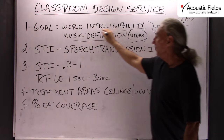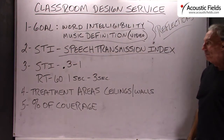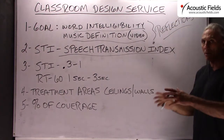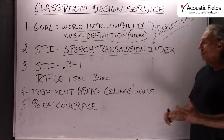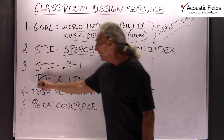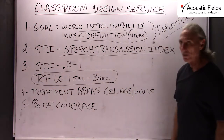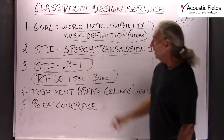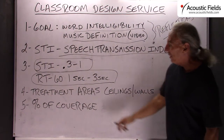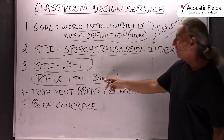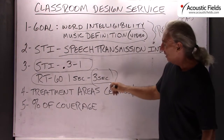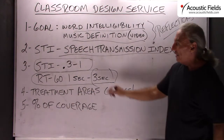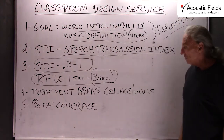For word intelligibility we do have an index called the STI index that we use. It has a rating of 0.3 to 1, and that is the goal you try to shoot for. That is really about controlling the RT60, or the amount of reflection time that you have in the room. RT60 calculations in most rooms run around the 3 second range and we try to get them down into the 1 second range, which complements the STI index nicely.